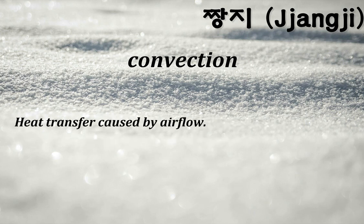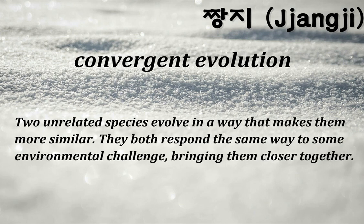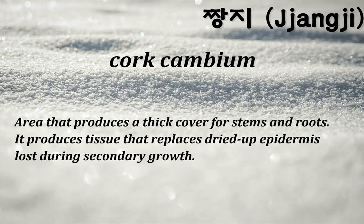Convection: heat transfer caused by airflow. Convergent characters: characters are convergent if they look the same in two species even though the species do not share a common ancestor. Convergent evolution: two unrelated species evolve in a way that makes them more similar, both responding the same way to some environmental challenge. Cork cambium: an area that produces a thick cover for stems and roots; it produces tissue that replaces dried-up epidermis lost during secondary growth.